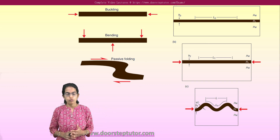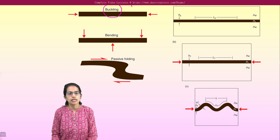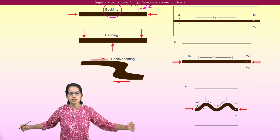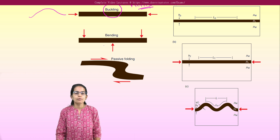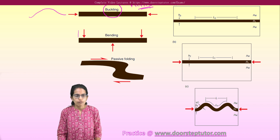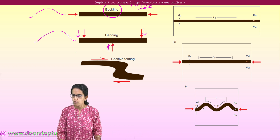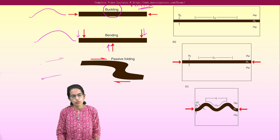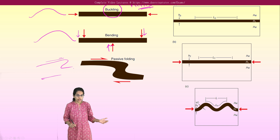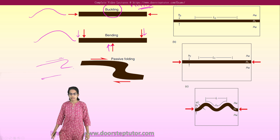There are three ways under which folds can be formed. The first is buckling, which is considered an active process — compression from both sides results in fold formation. The second is bending, where a force acts downward and from the center acts upward, forming a fold. The third is passive folding, which is similar to a shear effect. Shear folds due to excessive pressure are one example of passive folding.